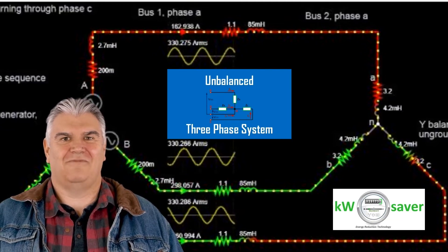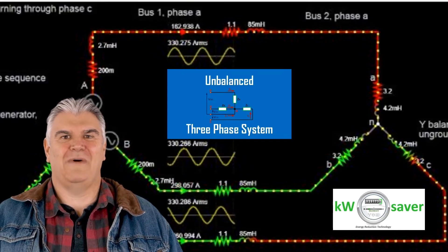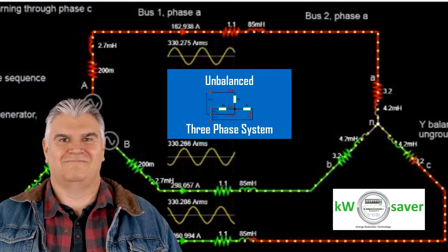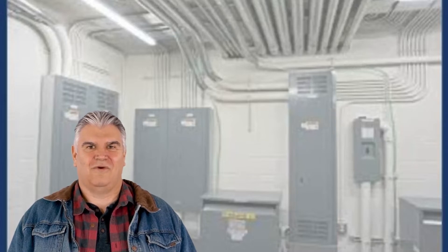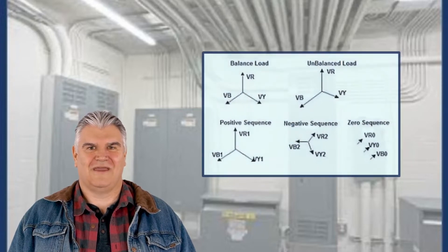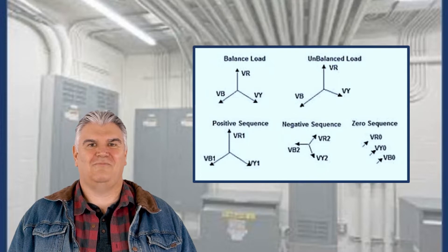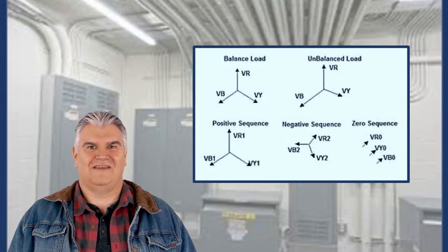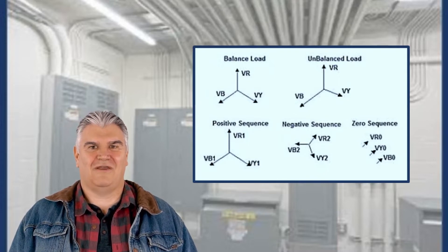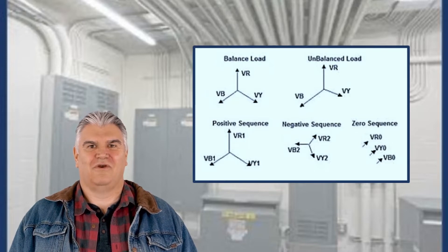However, voltage unbalance may have a worse effect on power quality of electrical power at distribution level. The voltages are quite well balanced at the generator and transmission levels, but the voltages at the utilization level can become unbalanced due to the unequal system impedances, the unequal distribution of single-phase loads, asymmetrical three-phase equipment and devices, unbalanced faults, and bad connections to electrical connectors.